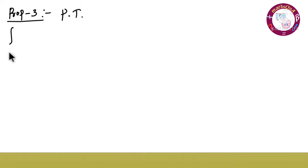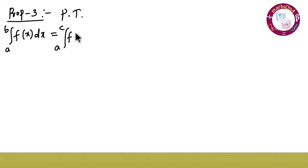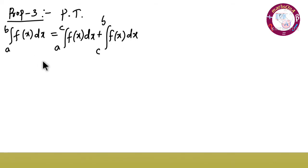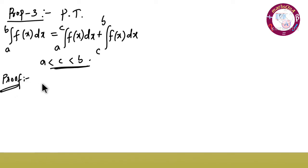Property number three. We have to prove that integration of a to b f of x dx equals integration of a to c f of x dx plus integration of c to b f of x dx, where the condition is a is less than c is less than b. Let us consider i1 equal to integration of a to b f of x dx.